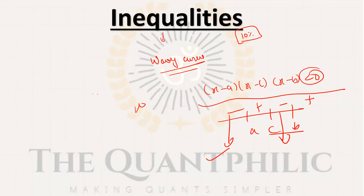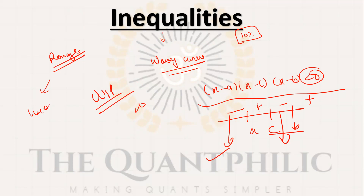Wavy curve is a VVIP topic — you may expect a direct question from it. There are also questions on range of x. For range of x questions, you can use the options. Chances are relatively low that pure range-of-x questions will appear, but wavy curve comprises a good, hefty portion of this topic.